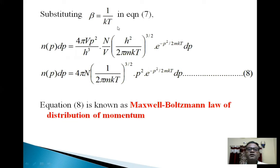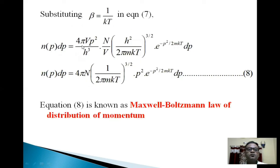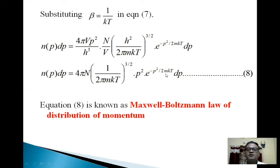Substituting β = 1/kT in Equation 7, we get: N_p dp = (4πV p² / h³) * (N/V) * (h² / 2πmkT)^(3/2) * e^(−p²/2mkT) dp. (Equation 8) This Equation 8 is the Maxwell Boltzmann law of distribution of momentum.